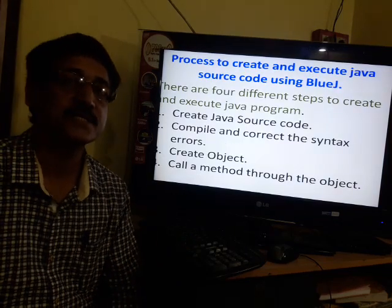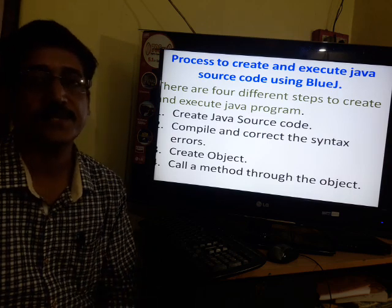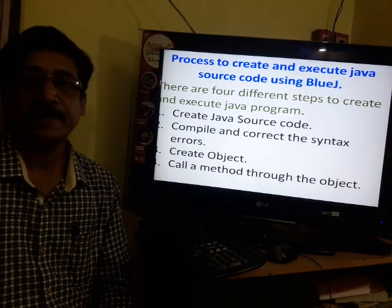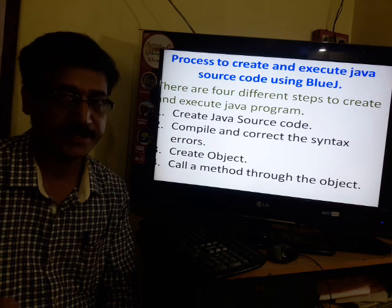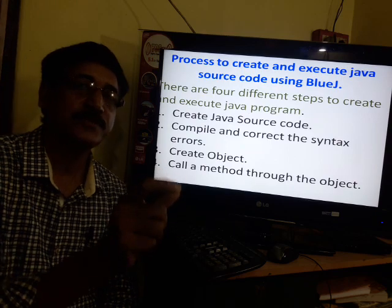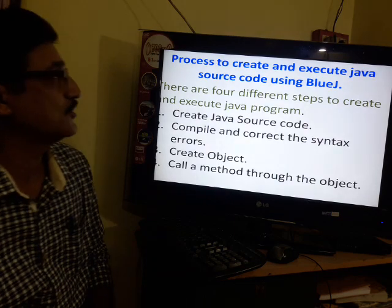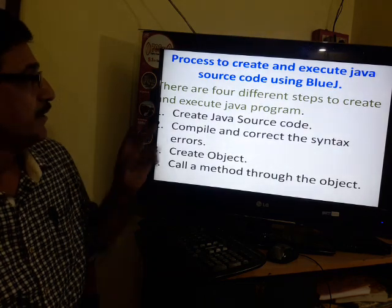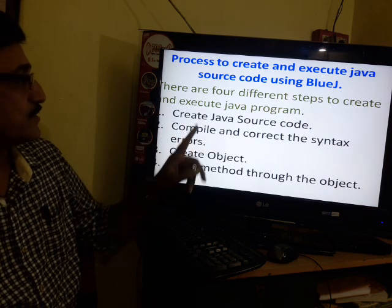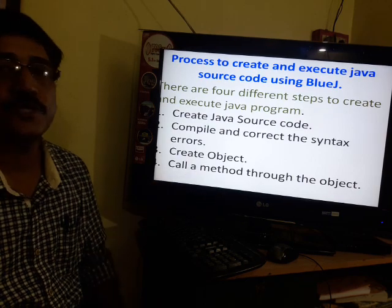Now I will tell you the process of writing and executing a Java program using BlueJay. There are four different steps required. First, create the Java source code. After writing the source code, compile and create the object. After creating the object, execute a method through the object. So the four steps are: create Java source code, compile and correct syntax errors, create object, and call the method through the object.